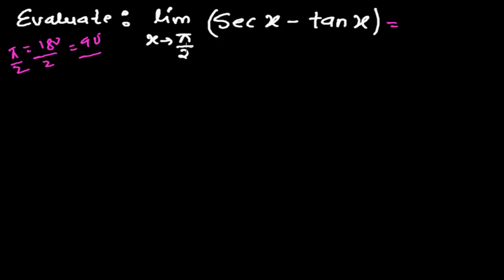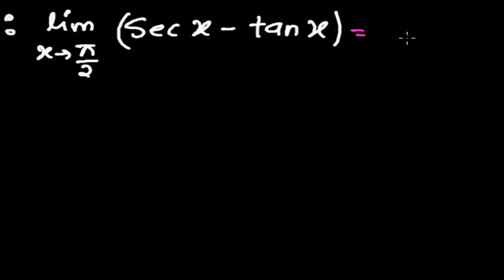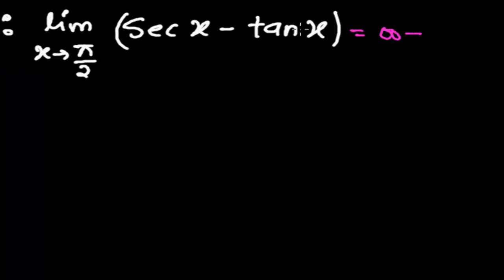When you plug the value of x = 90 here, then it will be sec 90. Sec 90 is equal to infinity, and tan 90 is also equal to infinity. So infinity minus infinity, that's some undefined value.